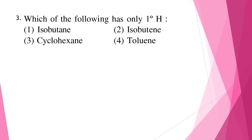Question three: which of the following has only one degree hydrogen? In isobutene, as there is no hydrogen on the central carbon atom, there will be only one degree hydrogen atoms. The correct answer is option two.